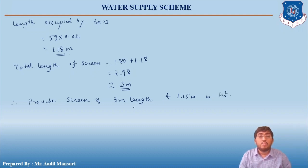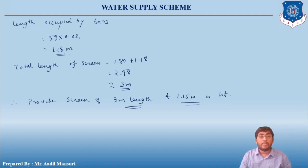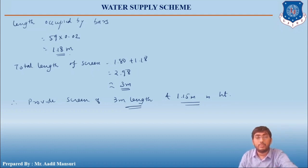This is the end of Step 2. The coarse screen has been fully designed with dimensions of 3 m × 1.15 m.